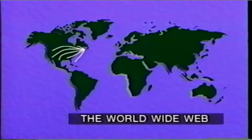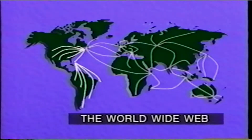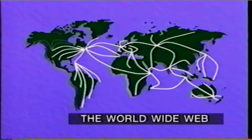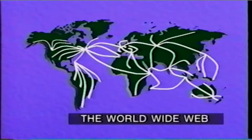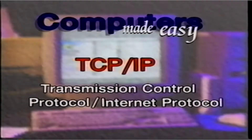The origins of the Internet we can all access today began as a United States Defense Department project in the 1960s to ensure that computer information could be transmitted even in the event of a nuclear war. By the early 1990s, this system was opened up to allow everyone access, even people at home. Today, the Internet is a computer network that joins together many millions of smaller networks around the world. When data is sent over the Internet, it goes in what is called the Transmission Control Protocol, Internet Protocol, or TCP/IP.